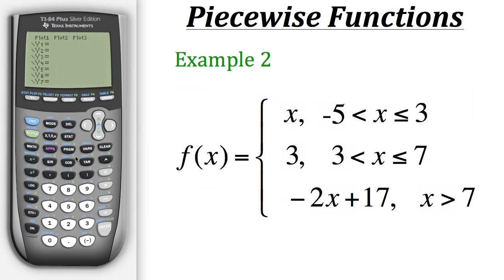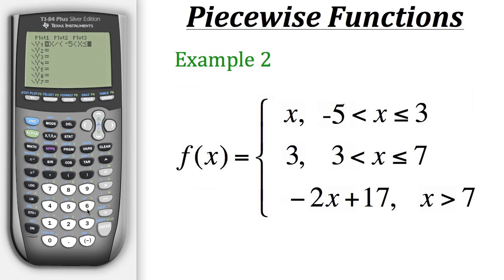So how do we put that into the calculator? Well first, we'll put in x as that first part of the function, and then we'll hit the divide button as we did with the previous example. Now at this point, we can't just directly put in the statement as we see it in parentheses — if we do that, we'll come up with an incorrect graph. I'll show you an example real quick. Right now we have the statement exactly how it's written in our piecewise function, but if we graph that, it obviously doesn't work.